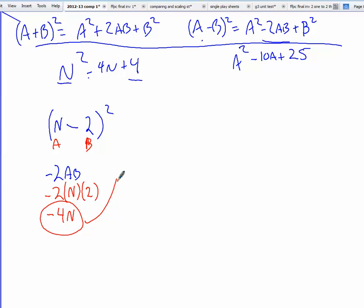Is this the middle term up here? Yes. Therefore, n squared minus 4n plus 4 is equal to n minus 2 squared. Here we have our factored form equation. Here we have our expanded form equation. And that's it.